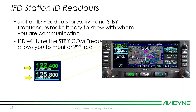We also have IFD station ID readouts — more than just the identifier, it gives you a long readout of who you're actually talking to. It does that for both standby and active comm. For example, you'd see 'Fort Worth' and 'Regional Approach' in your blocks rather than just a frequency or identifier code.